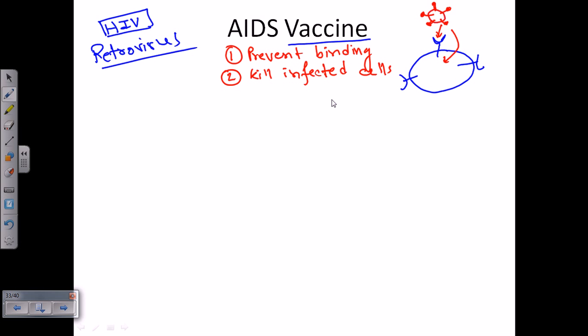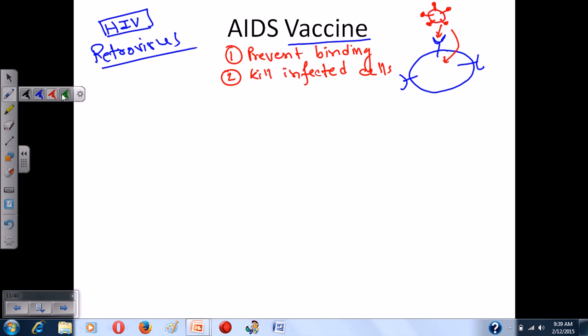There is no way of keeping those infected cells in our body, so we can kill them on our own purpose. These are the two strategies that we can exploit to produce vaccines.